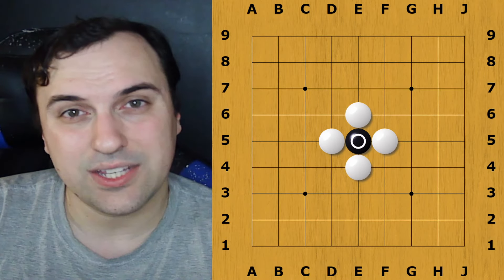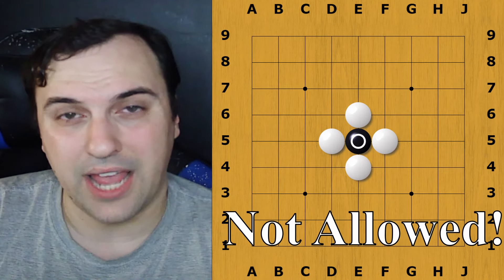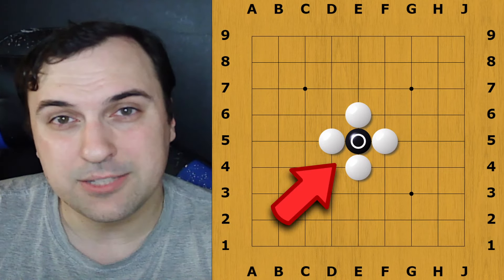This brings us to our next rule: Illegal Moves. Moves that have zero liberties are considered illegal moves and are not allowed to be played. That move must be placed somewhere else.